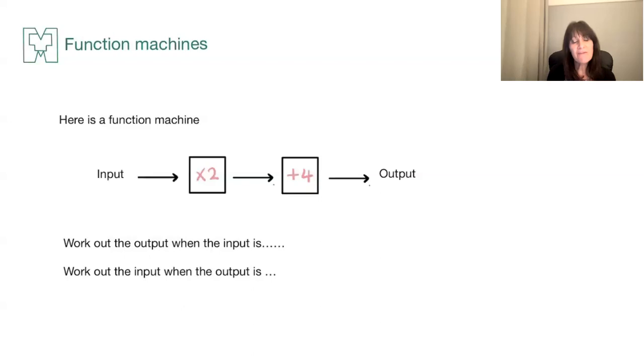So if my question said work out the output when the input is, let's say, five, that means five lives here. Input is five. So five is at that point in my function machine. When I travel across, I'm being very clearly told to times by two. So at this stage, I'm going to do a different color so it stands out. I've got five times two. Five times two is ten.